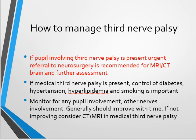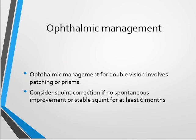The typical feature of medical third nerve palsy is that it tends to improve over time and the pupil is generally spared. Once third nerve palsy has been referred to the medical team, the ophthalmologist's role includes managing double vision or diplopia by temporary occlusion or patching of the eye, or incorporating prisms into glasses. Squint correction can be considered if there is no spontaneous improvement and the squint is stable for at least six months.